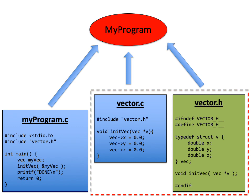Myprogram.c includes the standard library stdio.h with angle brackets and our custom vector.h with double quotes. It has the main function, declares a vec struct called my_vec, initializes that vector by passing it by reference to init_vec, prints "done", and returns zero.